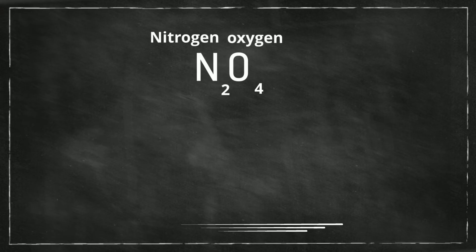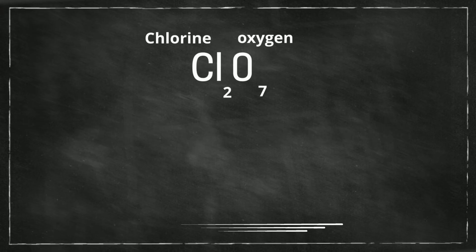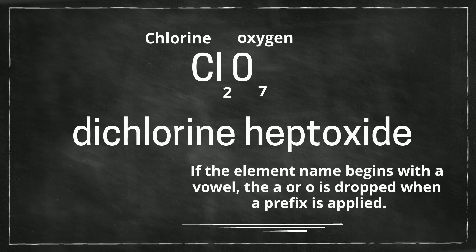Now, how about this one? You have two nitrogens and four oxygens, so it will be dinitrogen tetraoxide. And then let's look at one more: you have two chlorines and seven oxygens, so it becomes dichlorine heptoxide.